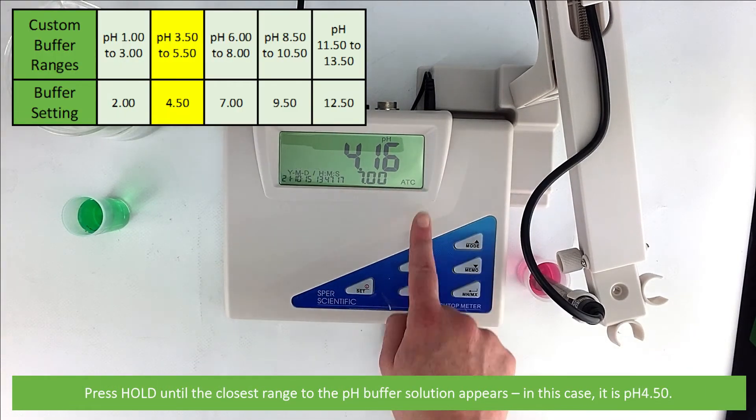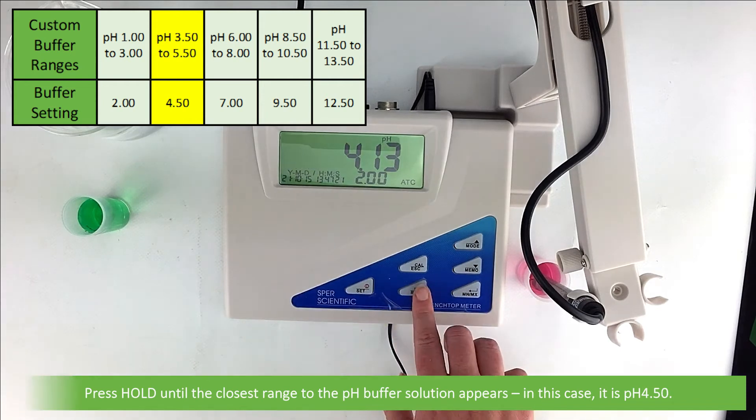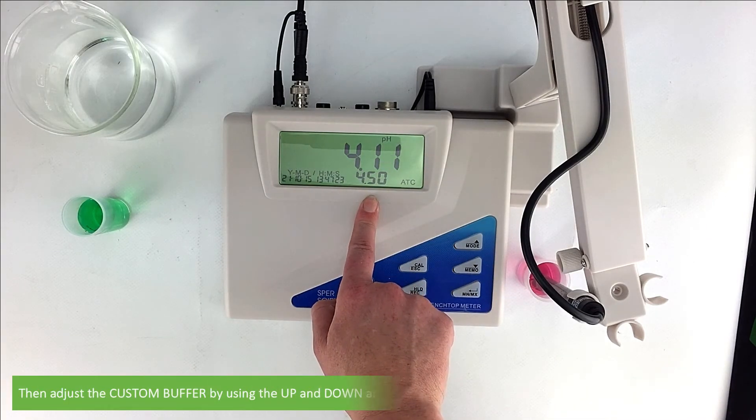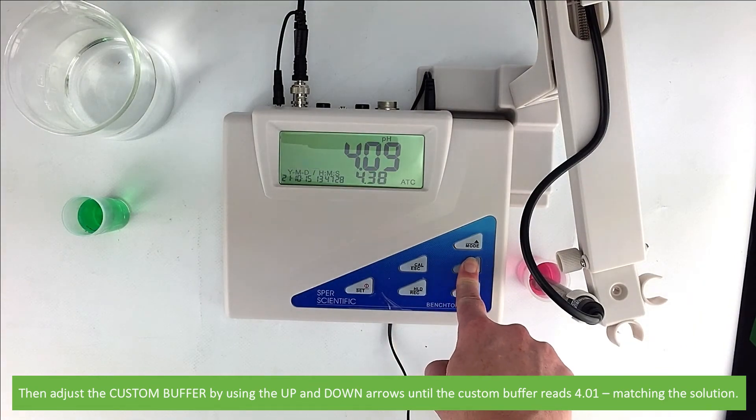Press hold until the closest range to the pH buffer solution appears. In this case, it is pH 4.5. Then, adjust the custom buffer by using the up and down arrows until the custom buffer reads 4.01, matching the solution.